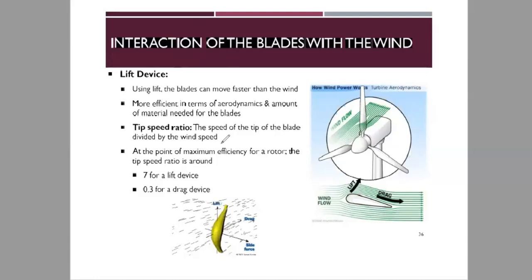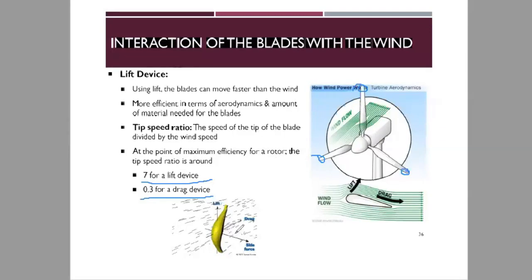The tip speed ratio is the speed of the tip of the blade divided by the wind speed. At the point of maximum efficiency for a rotor, the tip speed ratio is usually 7 for a lift device and 0.3 for a drag device. This shows the significant difference in performance between the two types.